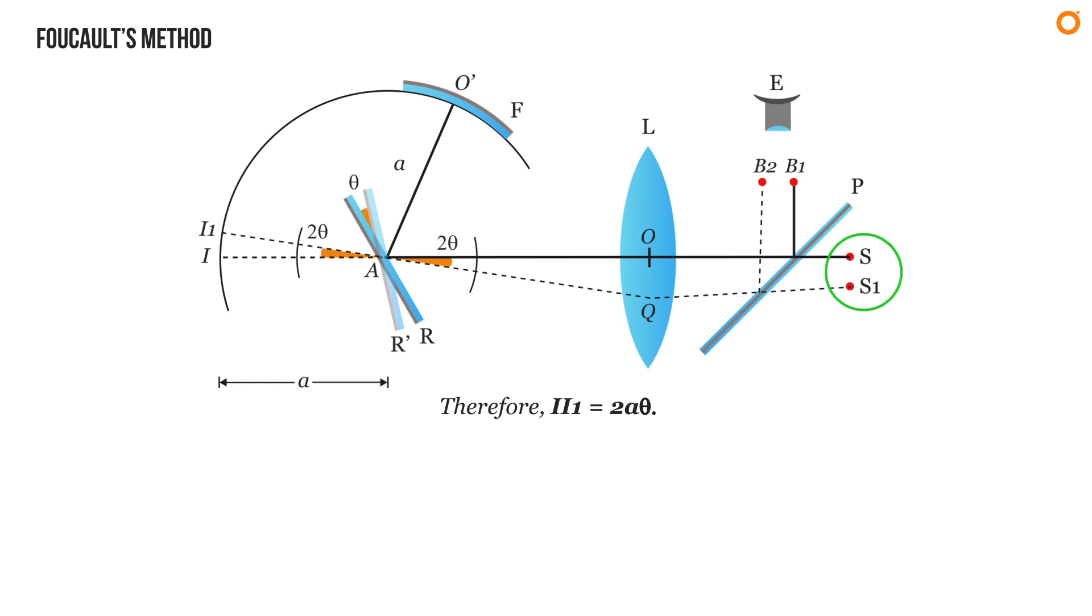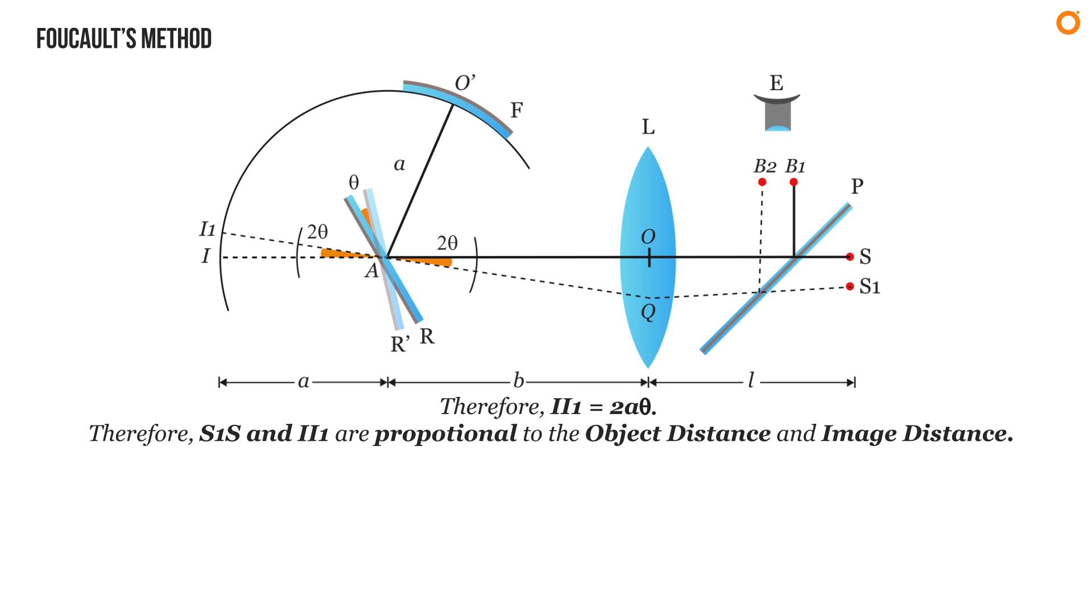From the diagram you can clearly see that S and S1 are the conjugate points with respect to I and I1. Therefore S1S and II1 are proportional to the object distance and image distance. If L is the object distance and B is the distance between lens and rotating plane mirror, then image distance equals A plus B. Hence S1S divided by II1 equals L divided by A plus B.